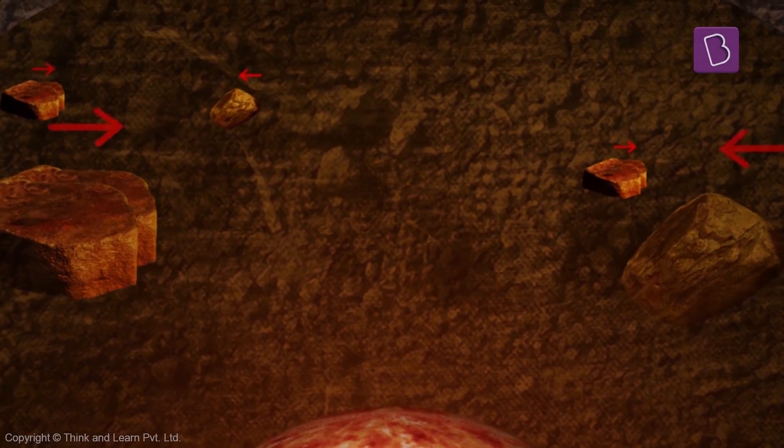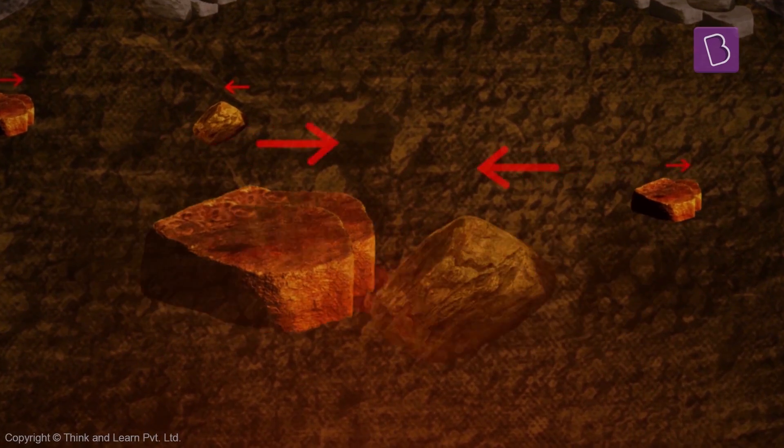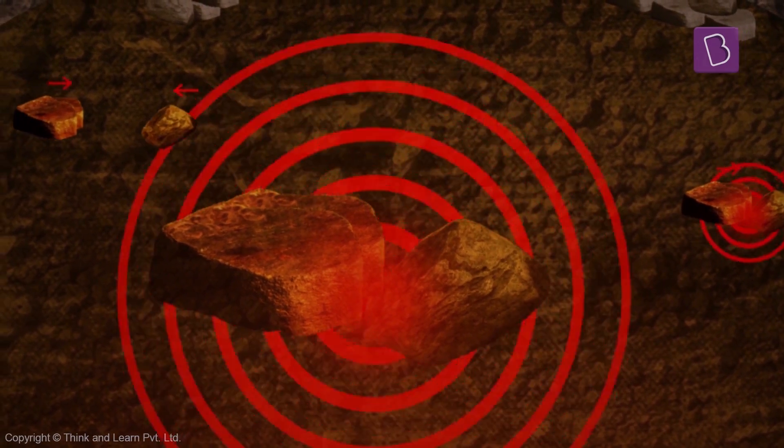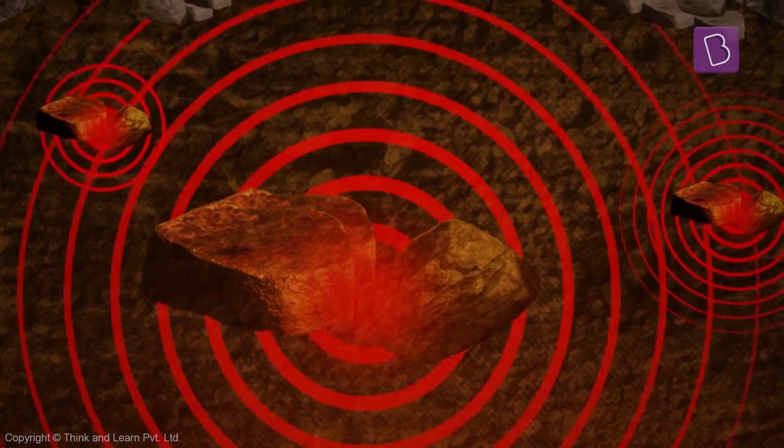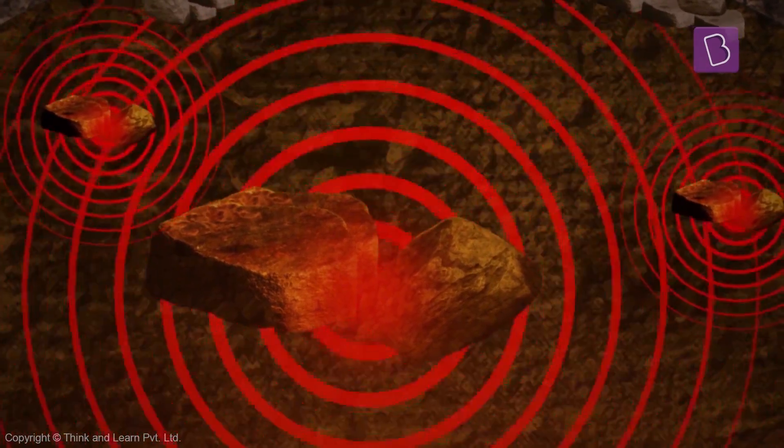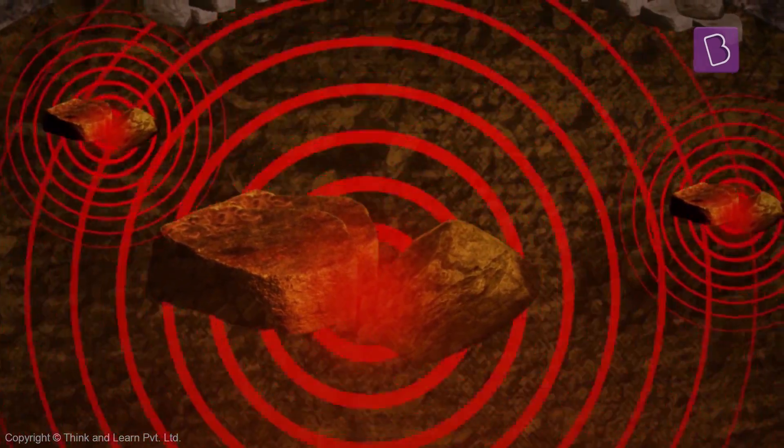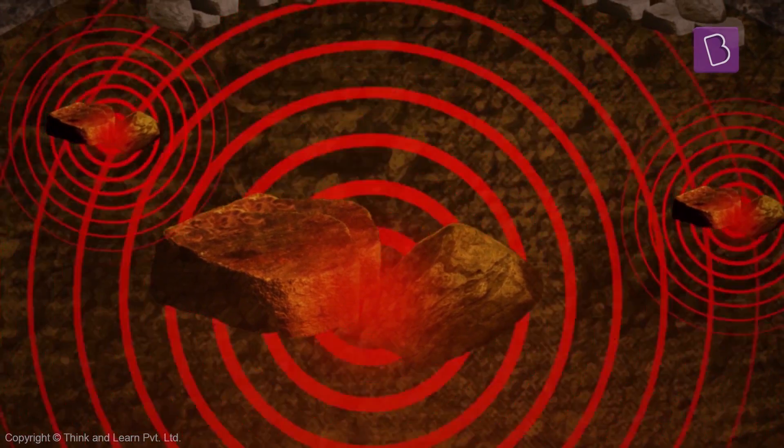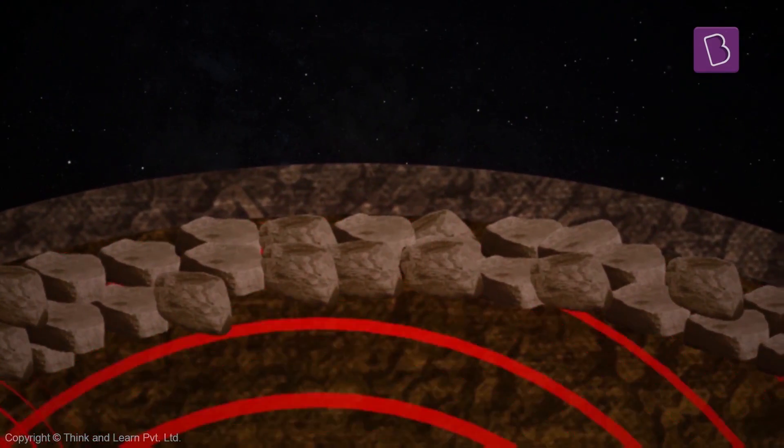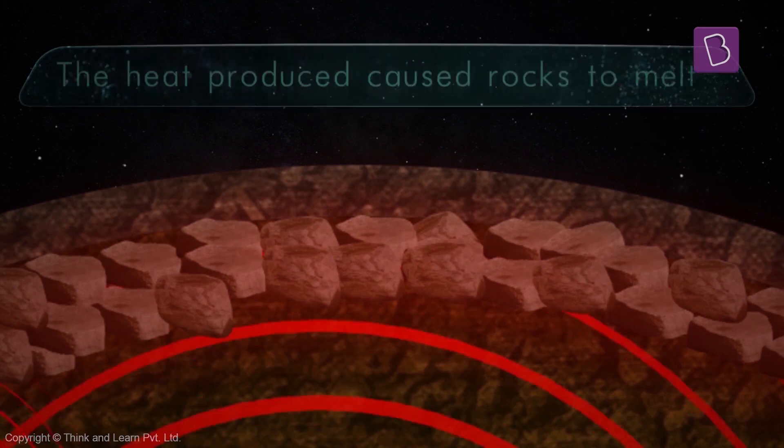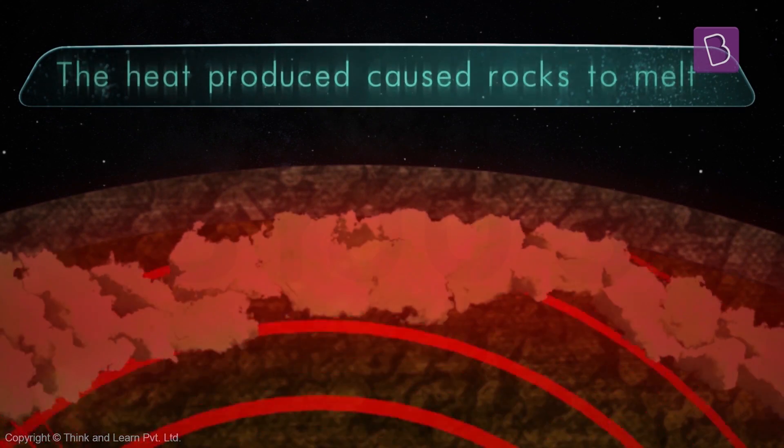When the Earth formed, material collided at high speeds. These collisions created heat. That heat became trapped in the Earth. This and many other things caused enough heat to partially melt some rocks in the upper mantle.